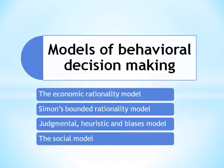The Economic Rationality Model. The basic assumption of the economic rationality model is that the decision-maker is perfectly rational while making a decision. This model has emerged out of the classical model of economics. It also assumes that the decision-maker establishes a link between means and ends rationally, is fully aware of the available alternatives, has a consistent set of alternatives to guide decision-making, and that there are numerous permutations and combinations possible to arrive at the best alternative.